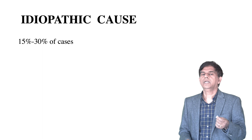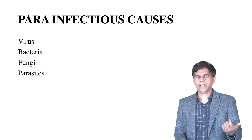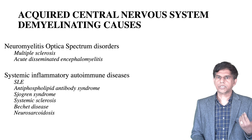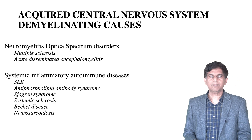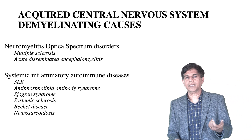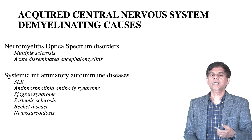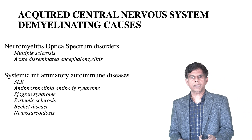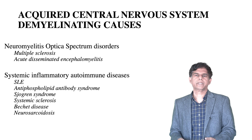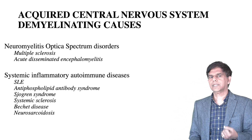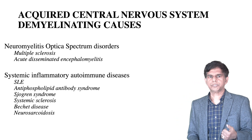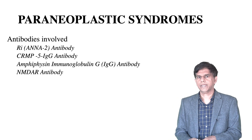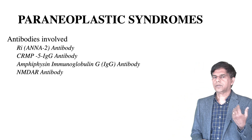Regarding causes: idiopathic accounts for around 30 percent — we don't know the cause. Infectious causes include viruses, bacteria, fungi, and parasites. Acquired or central nervous system demyelinating causes include neuromyelitis optica spectrum disorders, multiple sclerosis, acute disseminated encephalomyelitis, and systemic inflammatory autoimmune diseases such as antiphospholipid syndrome, Sjögren's syndrome, systemic sclerosis, Behçet's, and neurosarcoidosis.